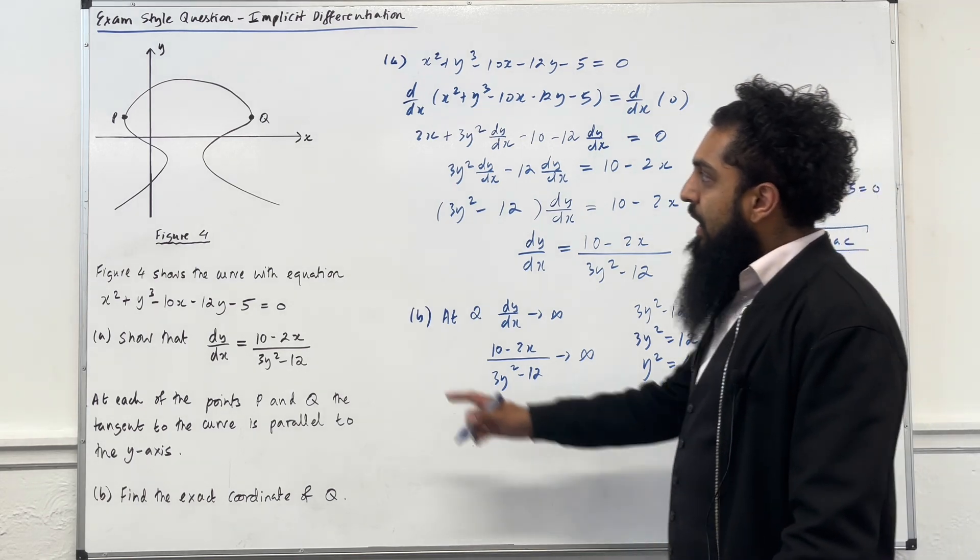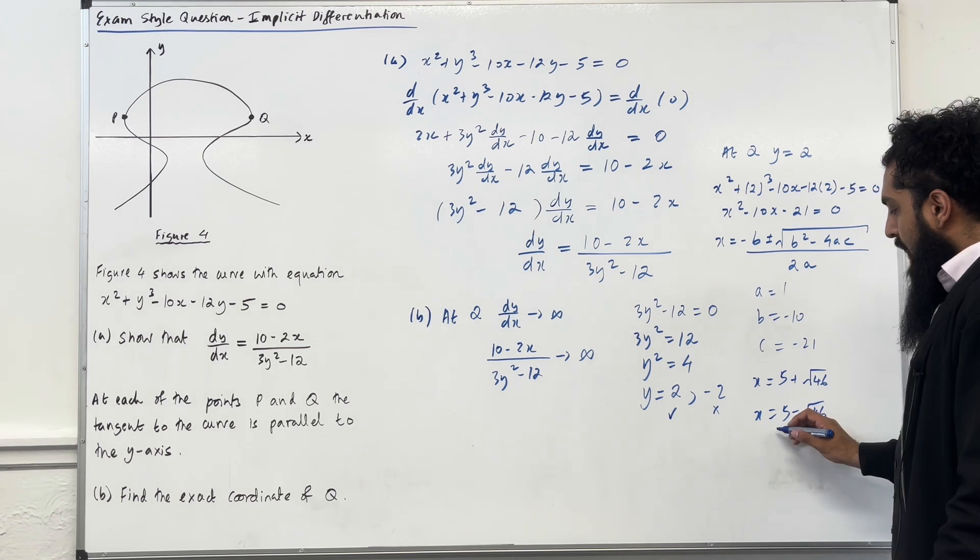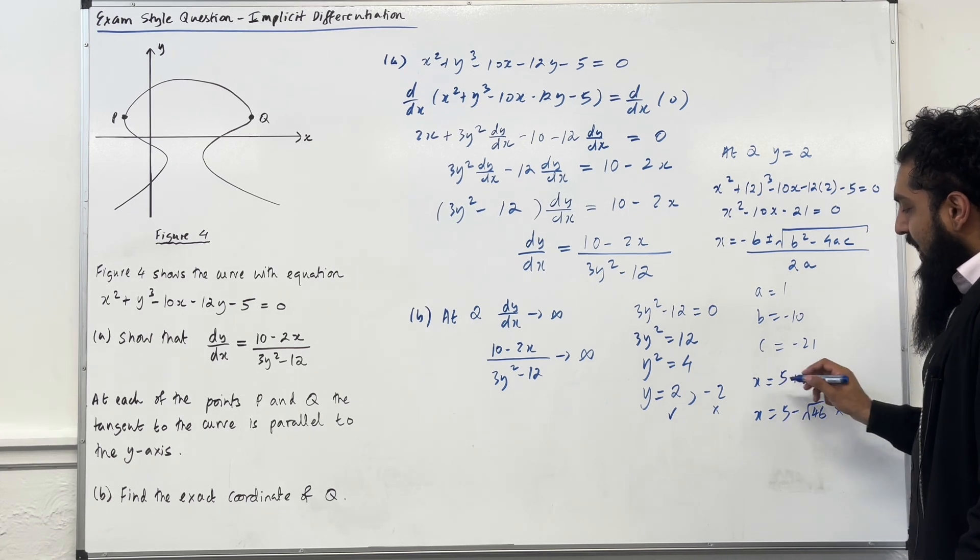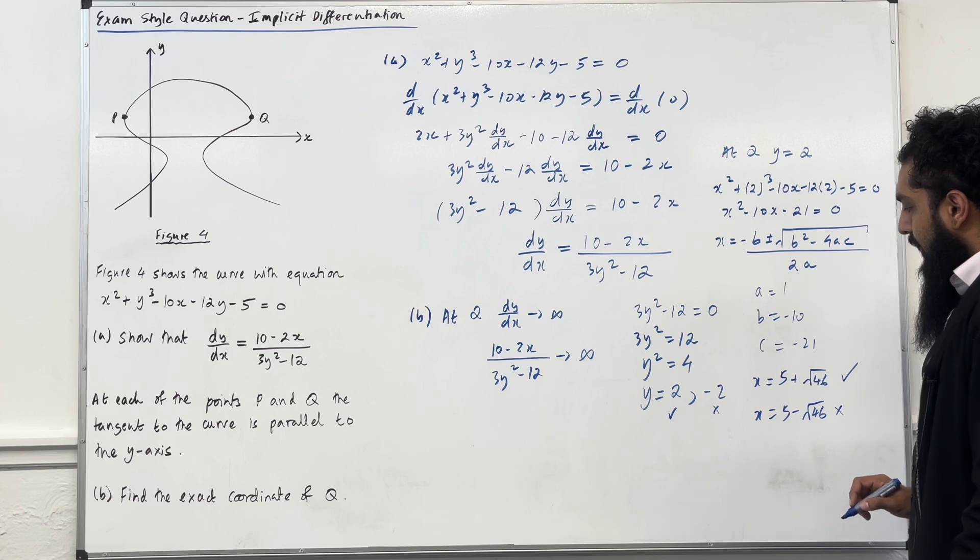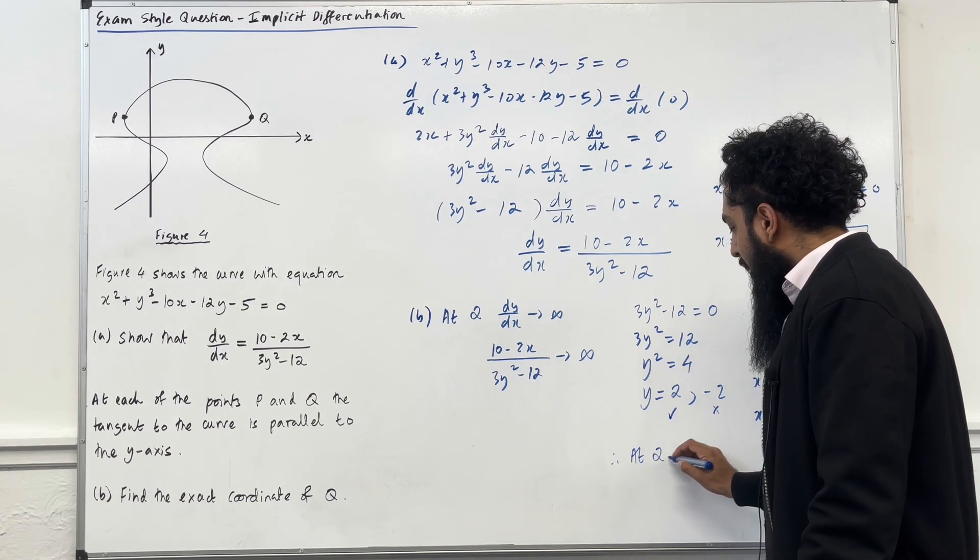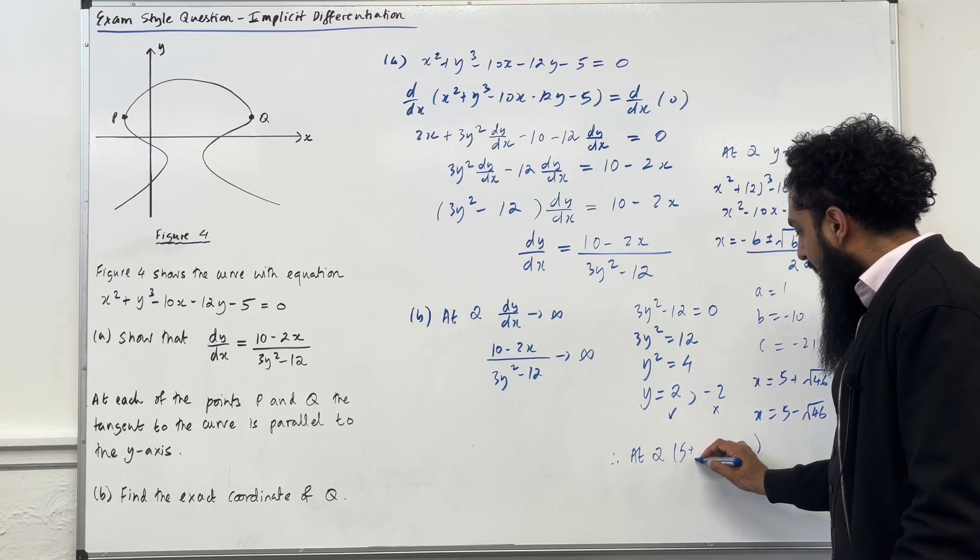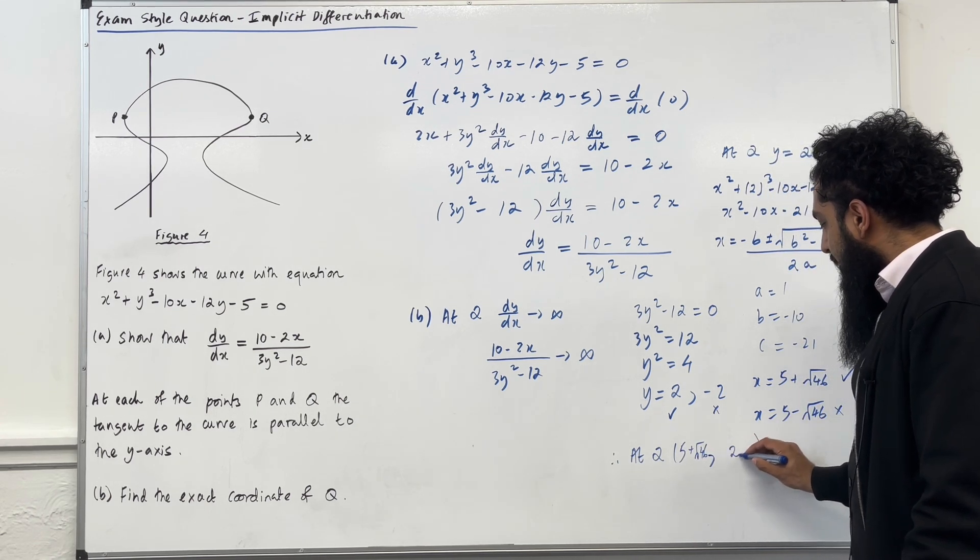Now, at the point Q, the x-coordinate has to be positive. So we have to reject 5 minus square root 46, but we accept x equal 5 plus square root 46. So therefore, at Q, the coordinate is going to be 5 plus square root 46 and 2.